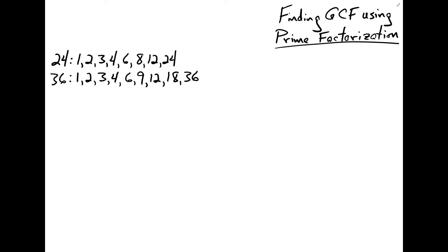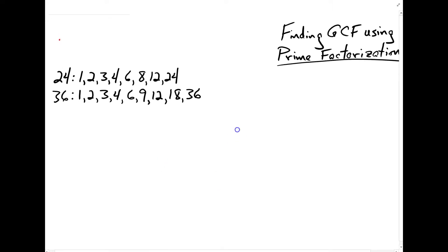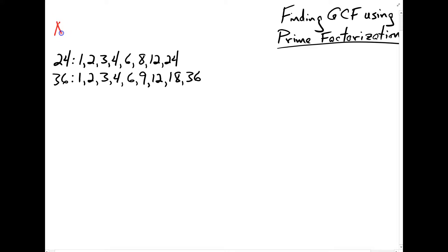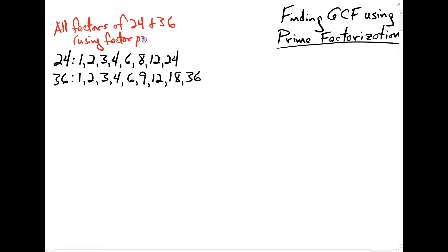We already found the greatest common factor of 24 and 36 by using factor pairs. We used factor pairs to find all of the factors of 24 and 36, and we can see that there are several different common factors between 24 and 36.